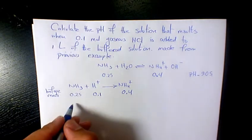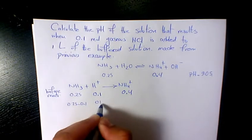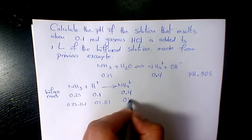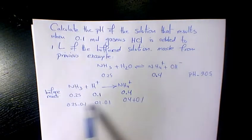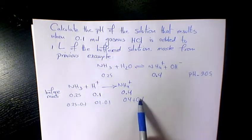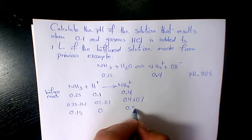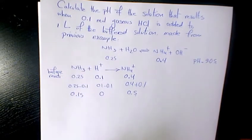So when they react, it's going to be 0.25 minus 0.1, 0.1 minus 0.1, here we have 0.4 plus 0.1 because they react with each other. Reduced by 0.1 and this one is added, so it's going to be 0.15, 0, and 0.5.